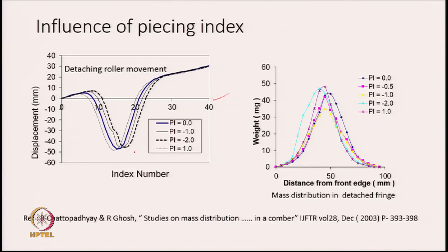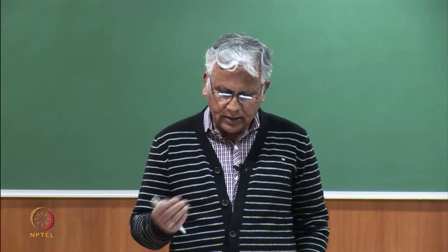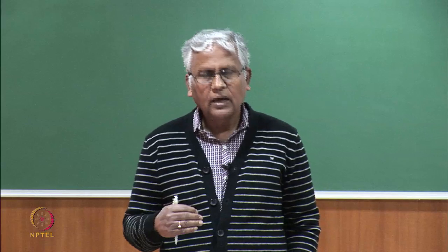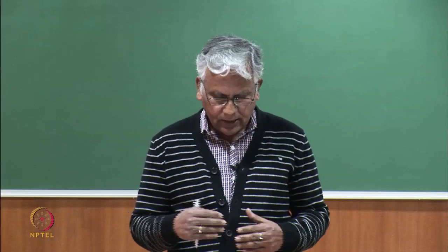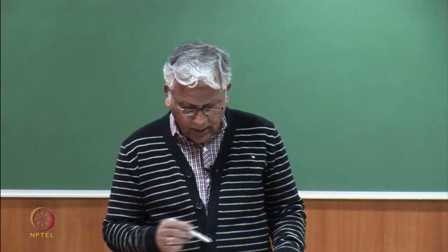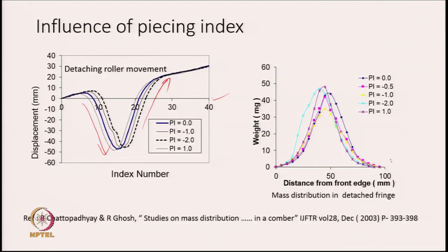The detaching roller movement as a function of index number from 0 to 40 is shown. The detaching roller moves backward first, then starts moving forward — forward journey then backward journey. The detaching rollers move backward to turn back the previously detached fringe, then the new fringe falls on it and both are pulled forward. As the piecing index setting is changed, the mass distribution profile changes slightly — the distribution of mass changes as we change the piecing index.